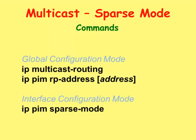Let's look at the commands needed to pass multicast traffic through the routers. In global configuration mode, you will need to type the IP multicast routing command that enables multicast routing on the router, and the IP PIM RP address command that statically assigns the address of the rendezvous point. In interface configuration mode, we will need to type the IP PIM sparse mode command that enables PIM sparse mode on the interface.